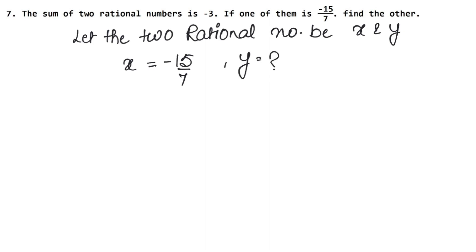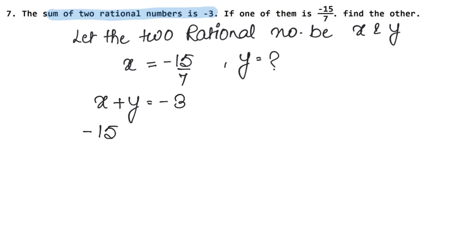Now in the question, the sum of two rational numbers is minus three. So we will write x plus y equals minus three. We substitute x as minus fifteen upon seven.